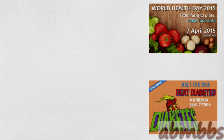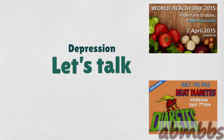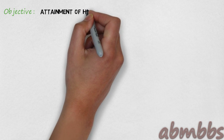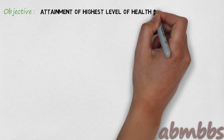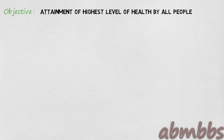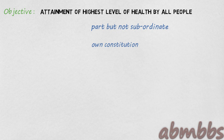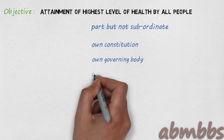For example, in 2015 it was food safety, in 2016 it was diabetes, and in 2017 it is depression. The objectives of the WHO: it is the attainment of highest levels of health by all people. It is a part of but not subordinate to the UN. It has its own constitution, own governing body and budget.